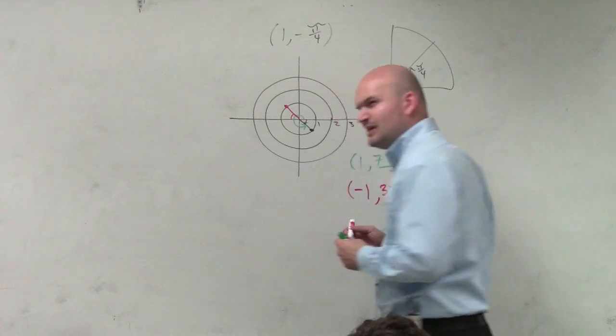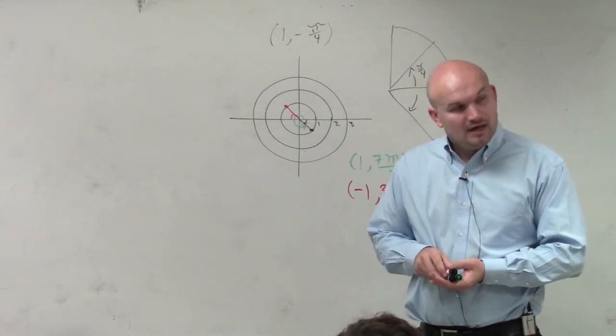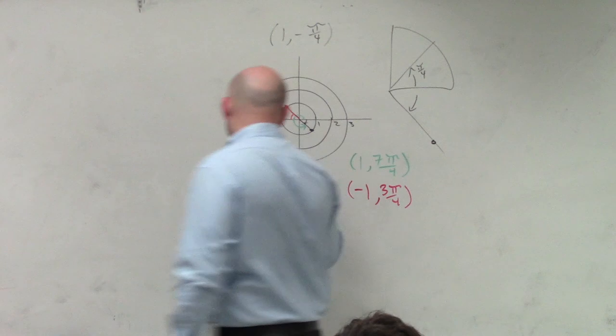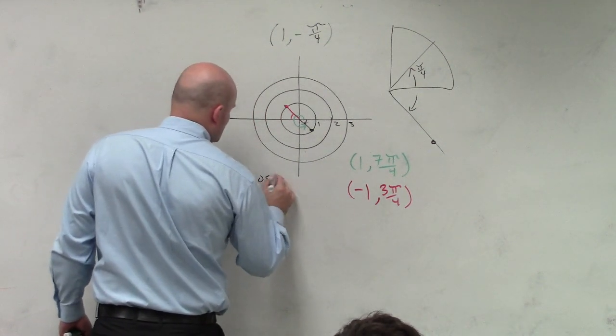And again, if you're like, I'm not sure if I did this correctly or so forth, again, remember, we can check our answers, right? x equals r cosine of theta.